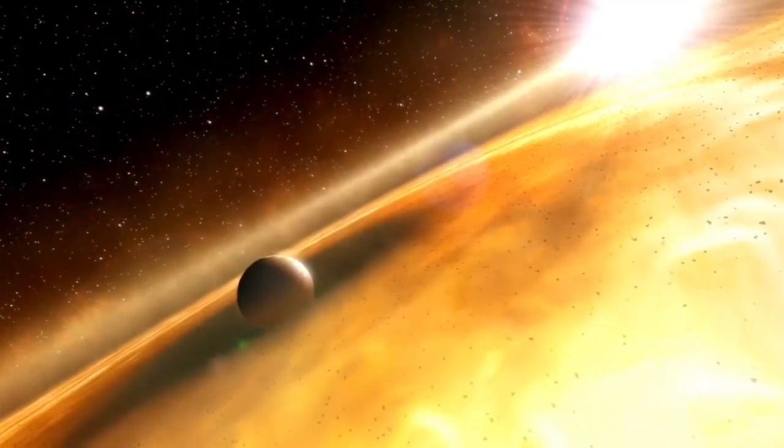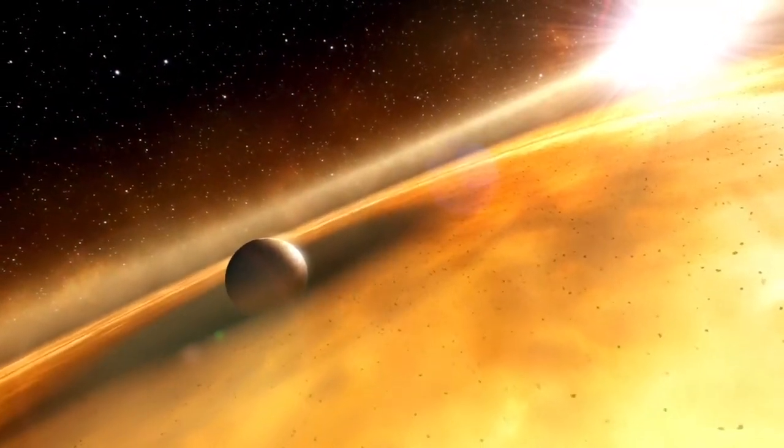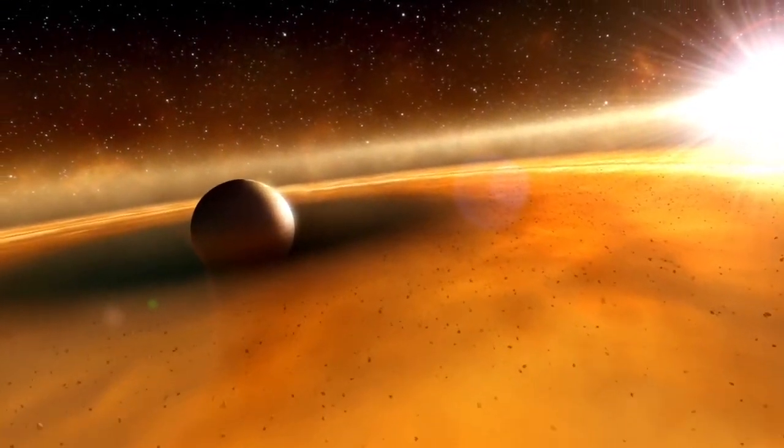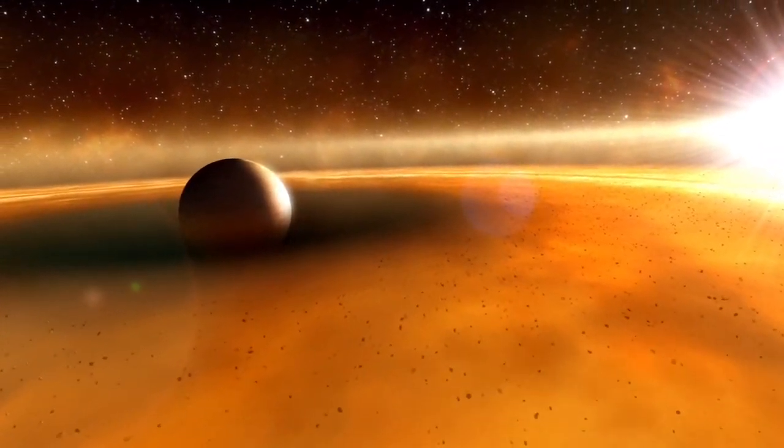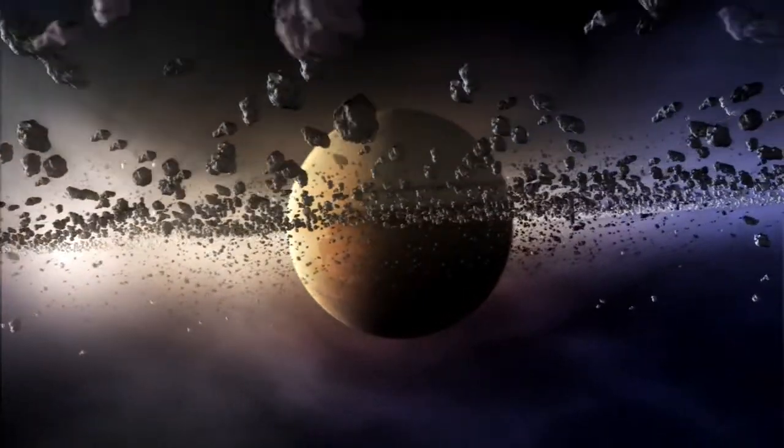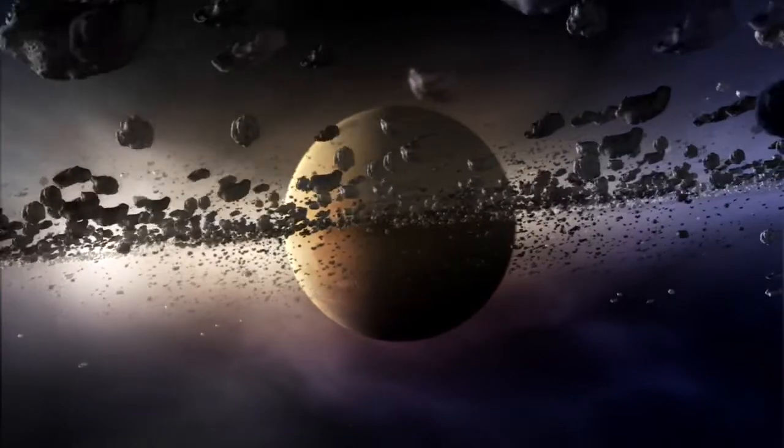So Hubble managed to peer through the glare and view the planet directly. Then clues were gathered to paint a picture of this exotic world. The shape of the disk hints that the planet is at most three times the mass of Jupiter. And the observations show that Fomalhaut B is much brighter than expected for an object of its size.